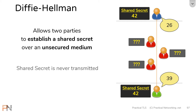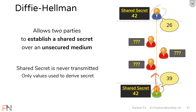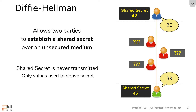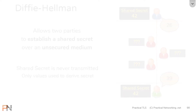Keep in mind the shared secret itself is never transmitted. These two users are never going to send 42 across the wire because then everybody will know about it. Instead they share other values that are used to derive that secret.